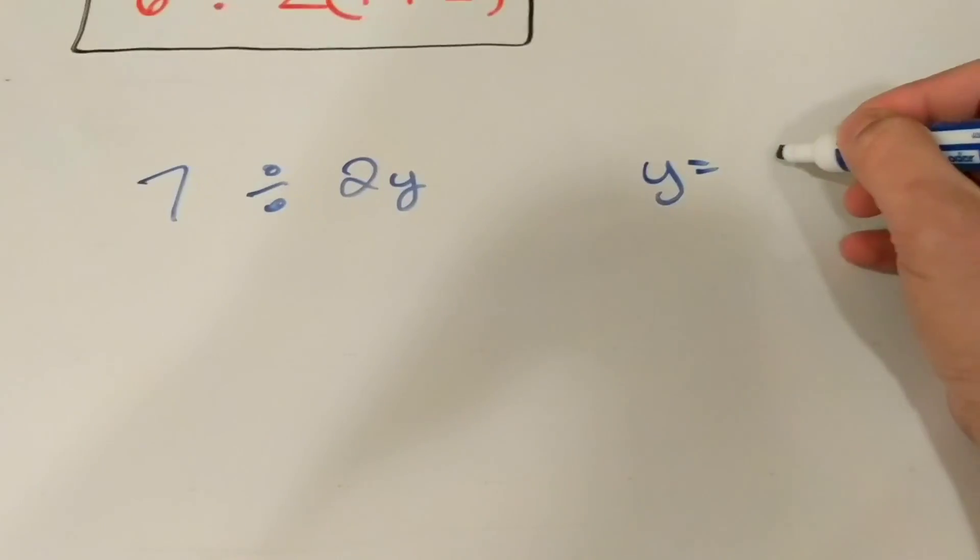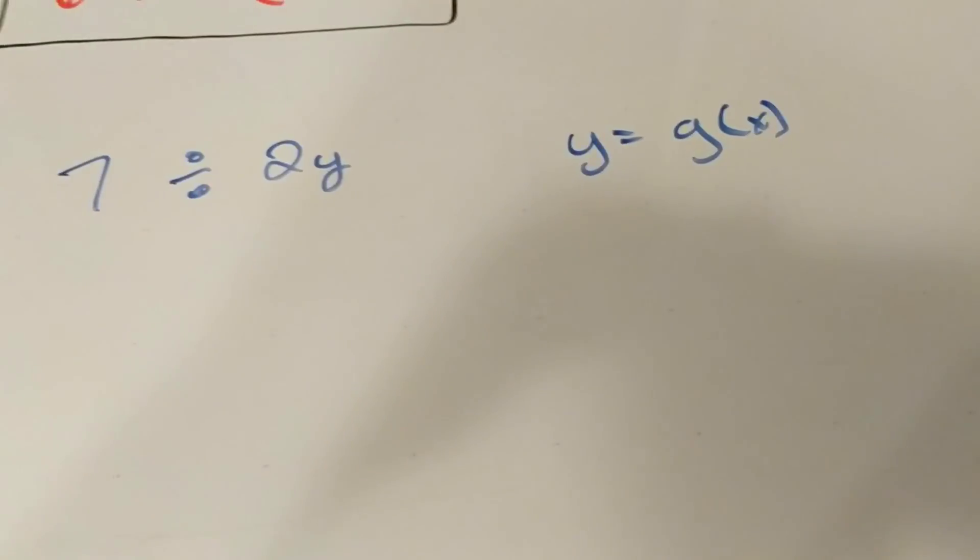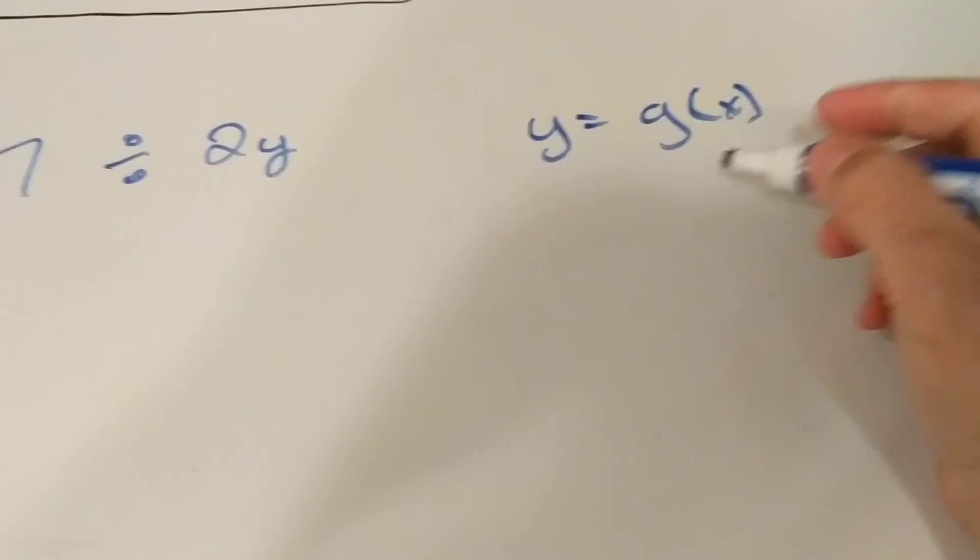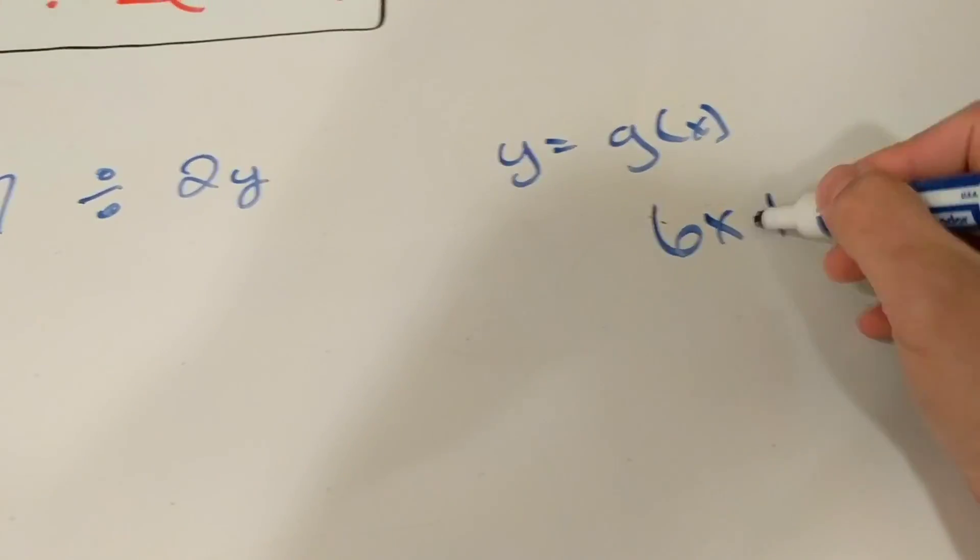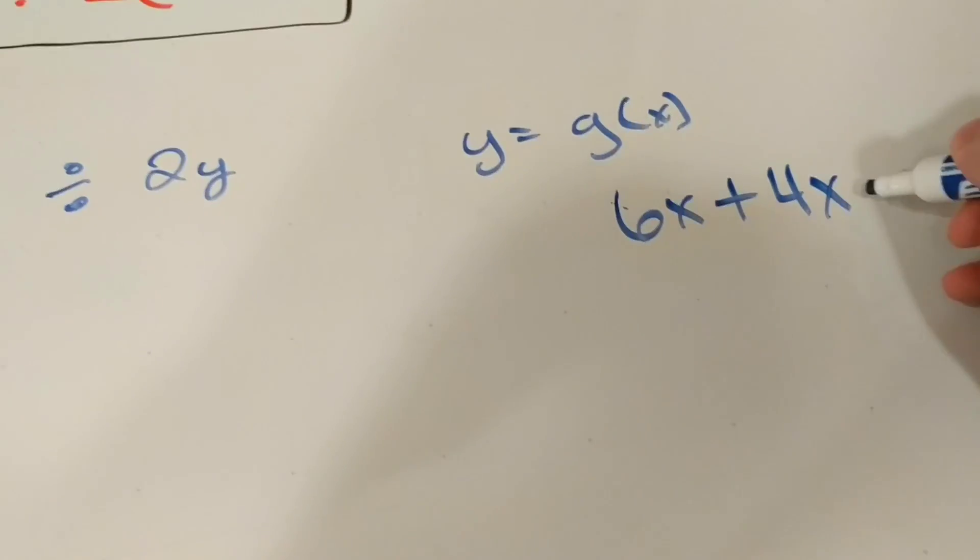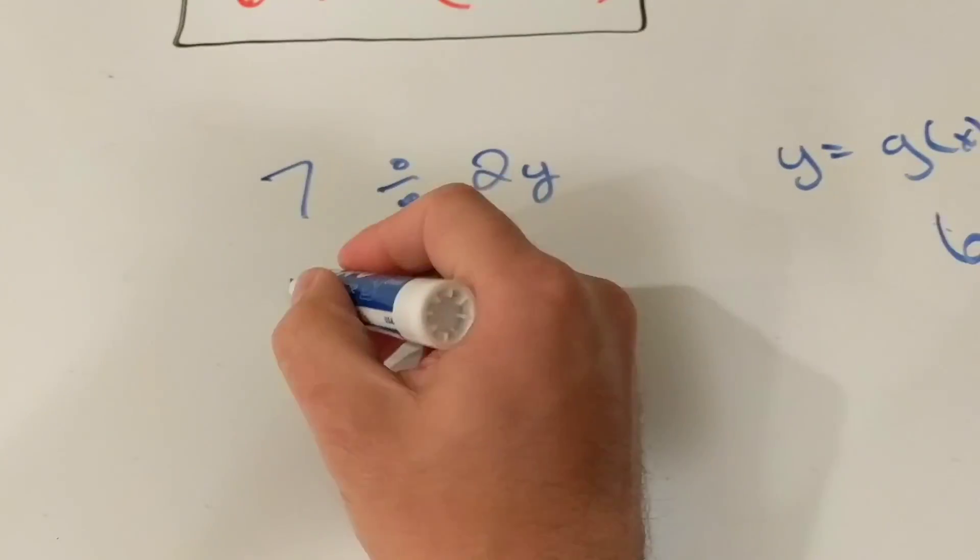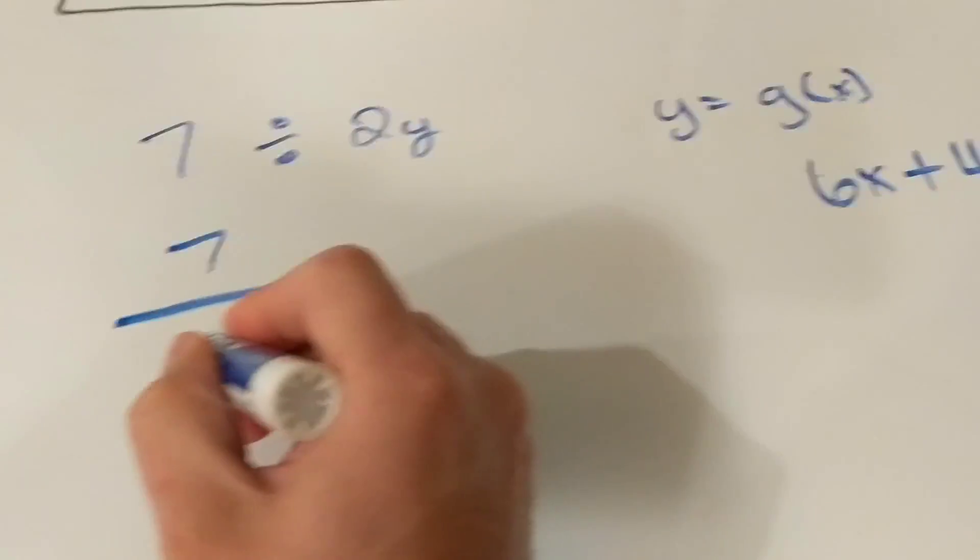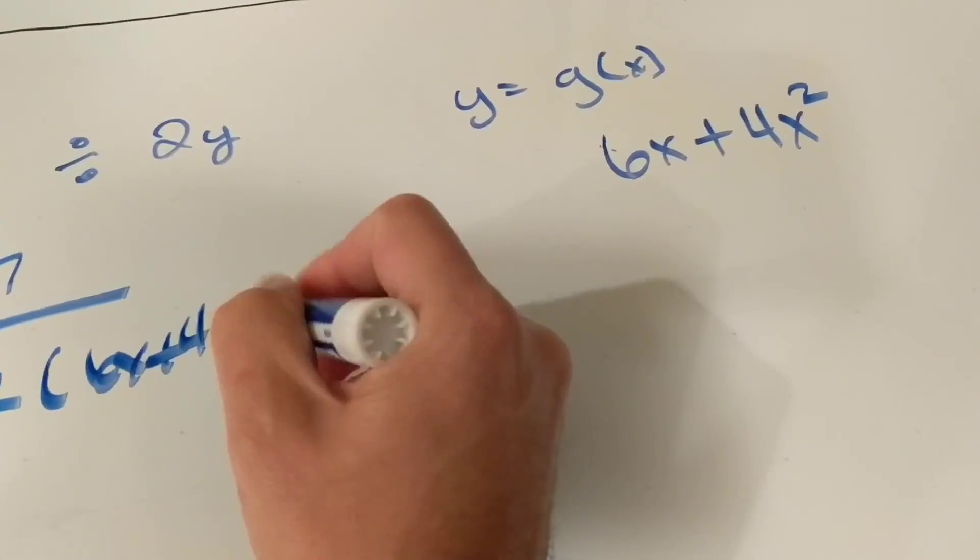We could say y could equal g of x. And g of x could be anything. It could be 6x plus 4x squared could equal y. And so what you would do then is you would say that 7 divided by 2 times 6x plus 4x squared would be the equation that you have.